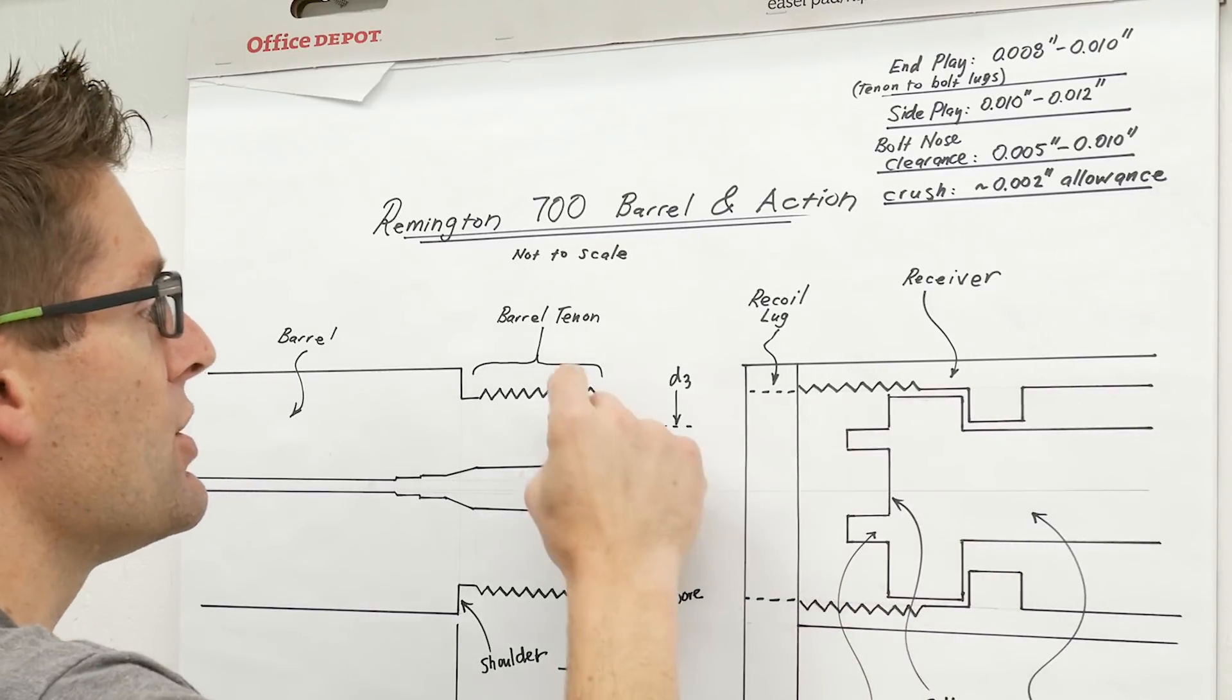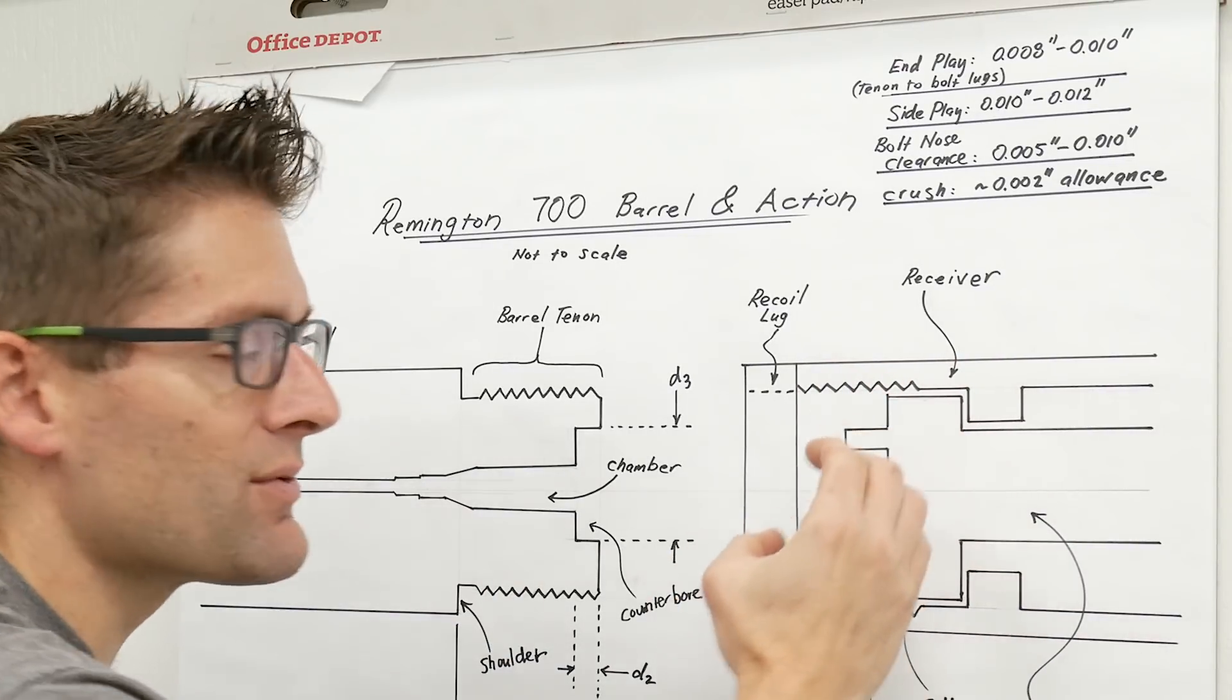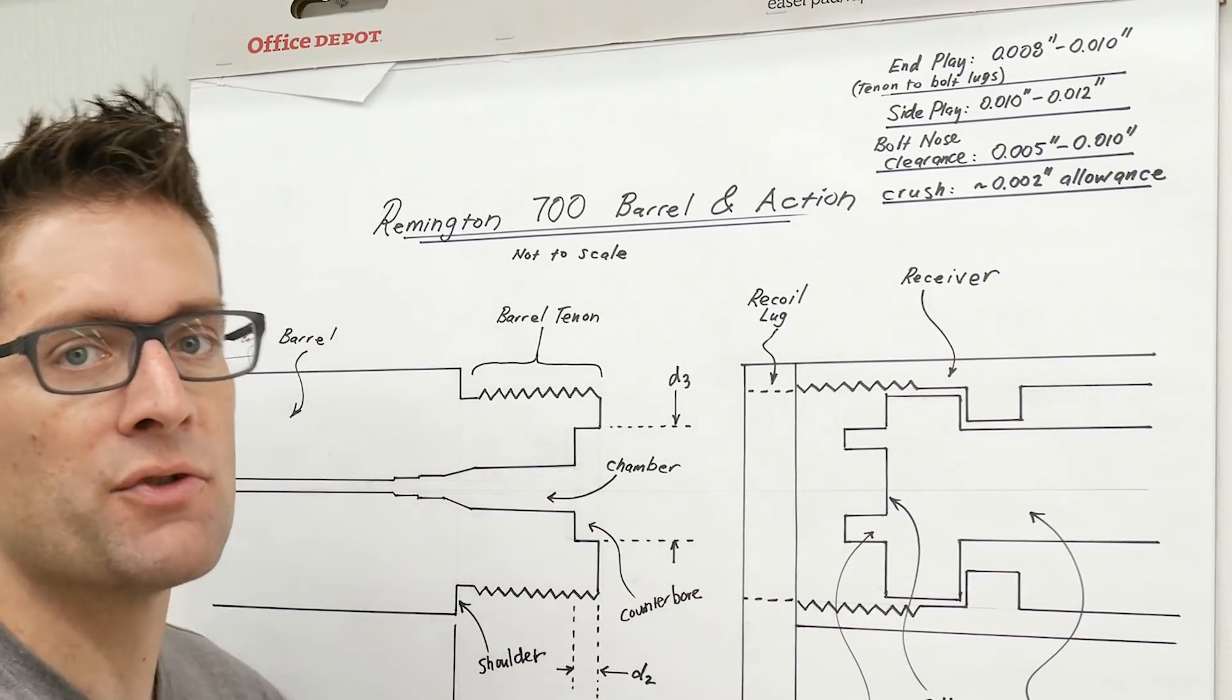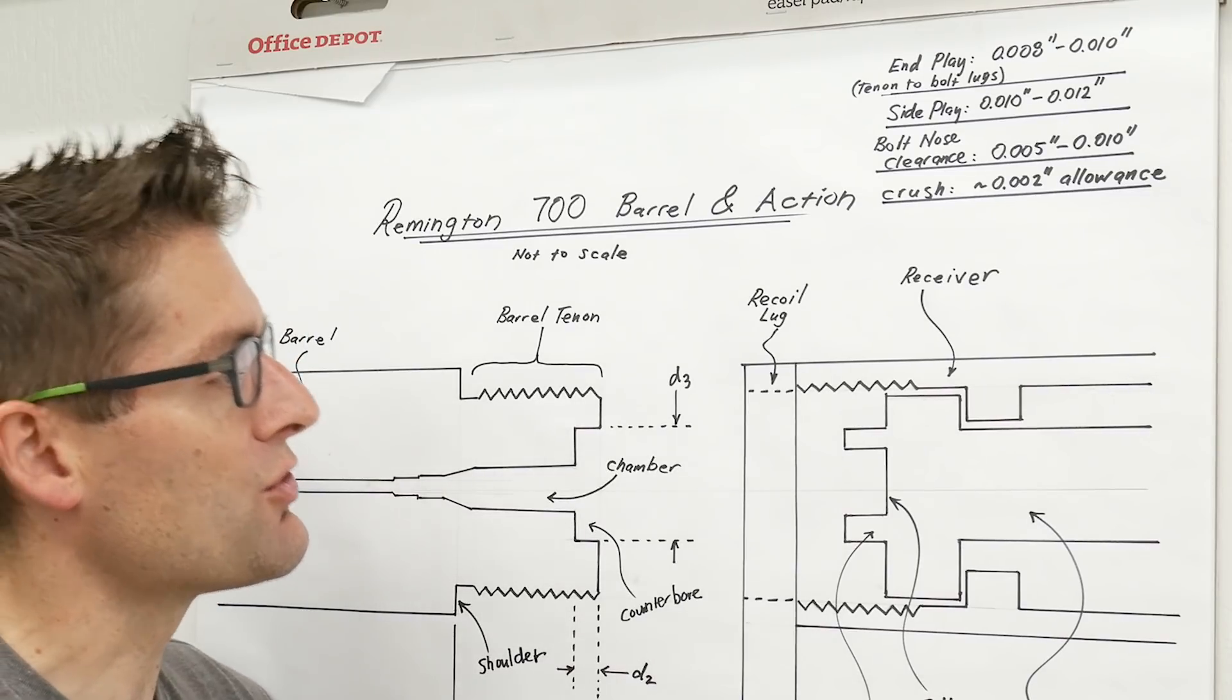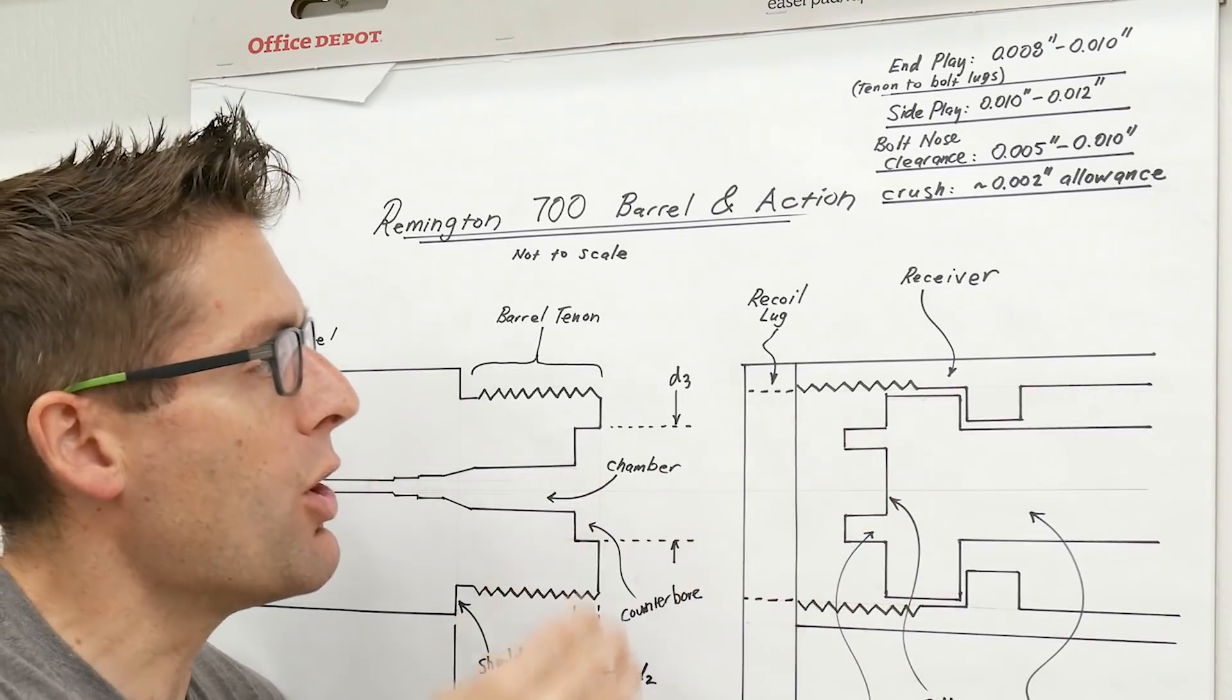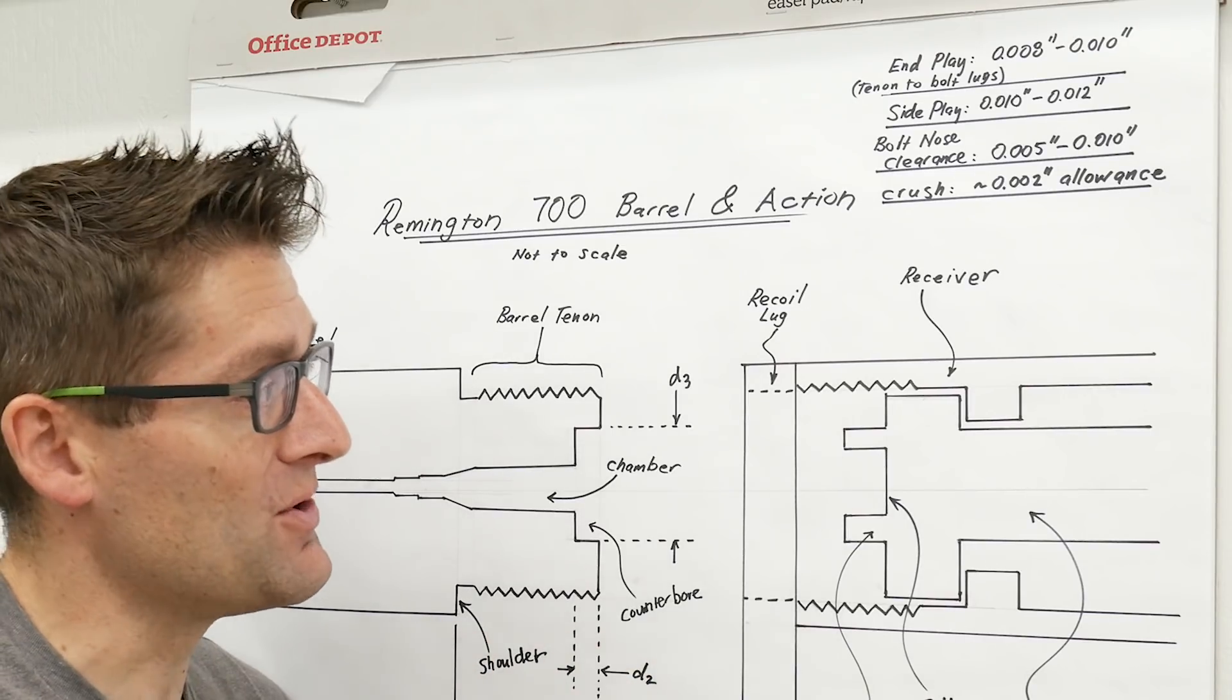You got your bolt nose, you got the section of the tenon outside the counter bore, and then you've got the receiver. And that case room is held with those three concentric rings which makes it amazingly tough and amazingly strong. All things we need to know about and know how these components interface with each other when we're creating our build sheet.